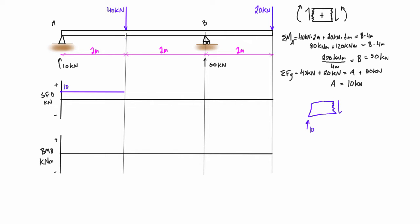When we extend the free body diagram just to the right of the first point load, we include that 40 kilonewtons pressing down. So we have 10 going up and 40 going down, meaning we need 30 kilonewtons going up from the internal shear — but that's opposite the positive sign convention, so it's minus 30. This drops us to minus 30 kilonewtons, which is the internal shear throughout this entire region of the beam.